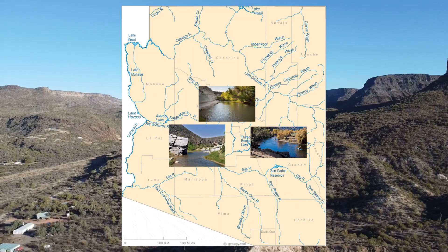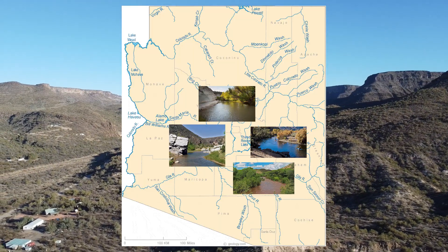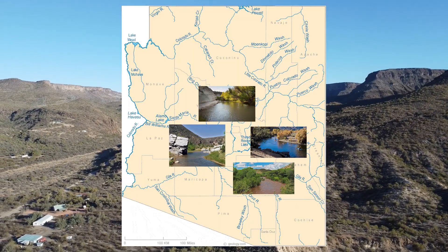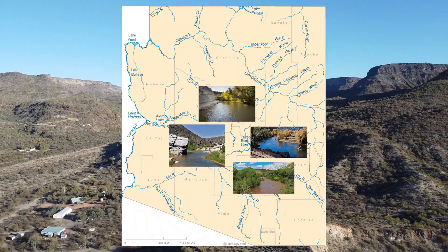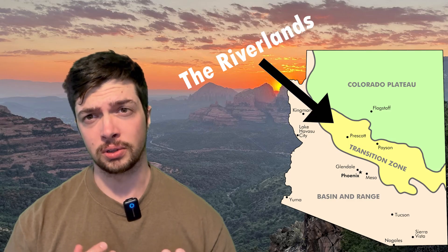Salt, and Gila rush through the plentiful canyons that line the interior of Arizona. Most all of Arizona's interior rivers with few exceptions exist in this narrow band known as the transition zone. Arizona's Riverlands.